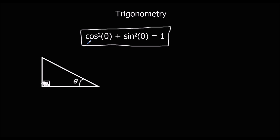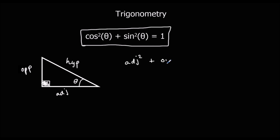I'm going to show you a quick proof of it first. If we've got a right-angle triangle, the hypotenuse is the longest side, the opposite is opposite the angle, and the adjacent is in between the angle and the right angle.